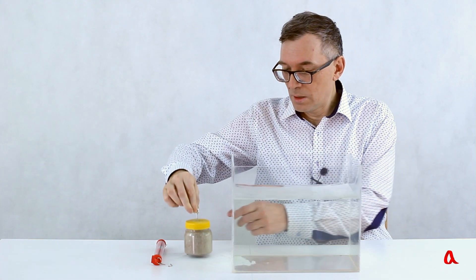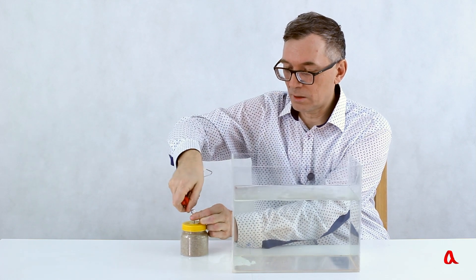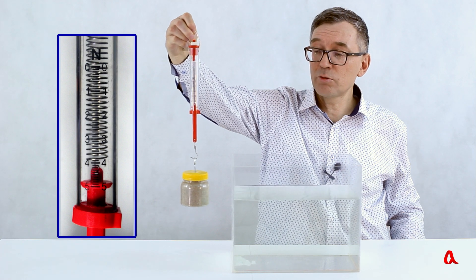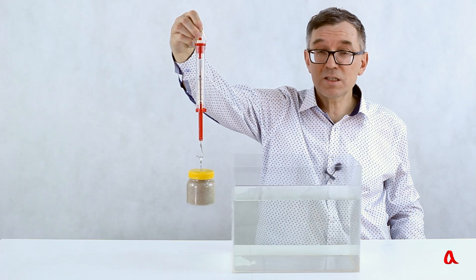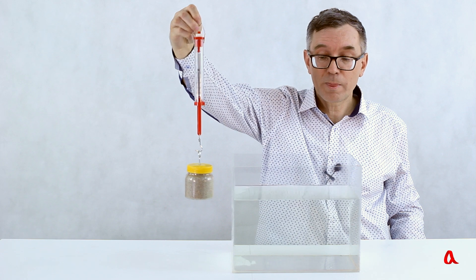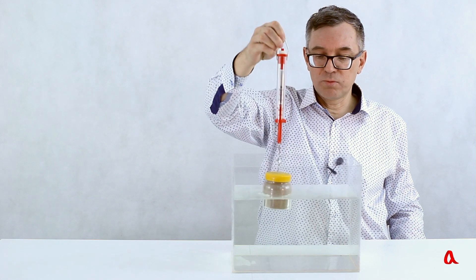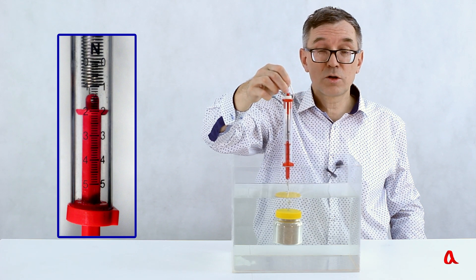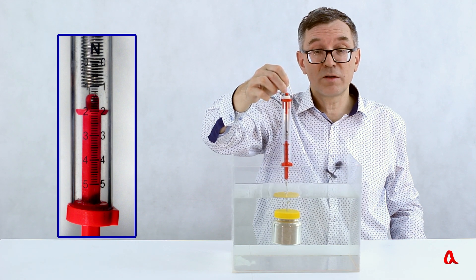To check it, let us suspend the load onto a dynamometer. The dynamometer scale is fully stretched now and it points at 5N. Let us immerse the load and we see that the dynamometer points at 2N now. The load has lost more than a half of its weight.